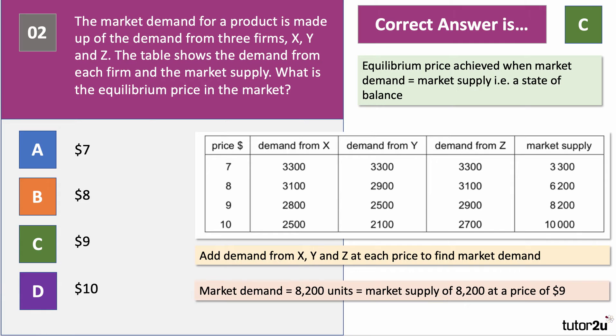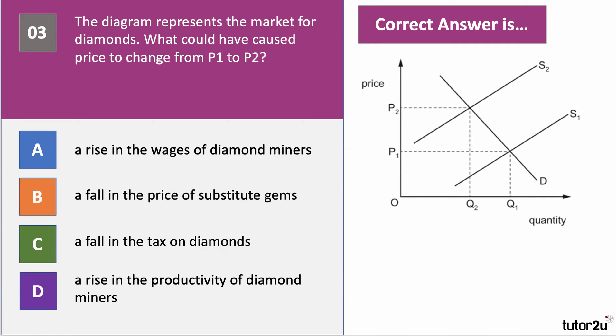Let's move on to question three. This diagram shows the market for diamonds. What could have caused the price to change from P1 to P2? Press the pause button and have a go.